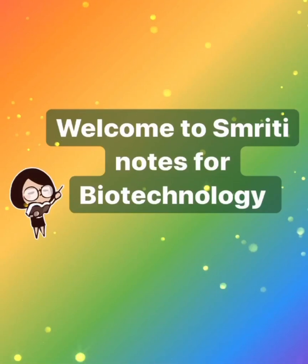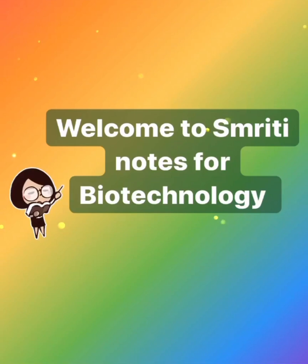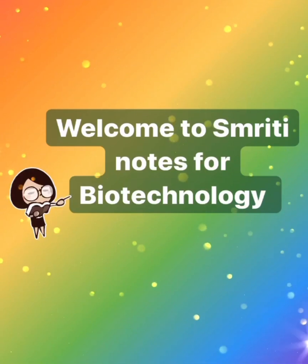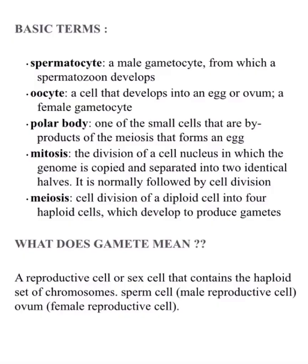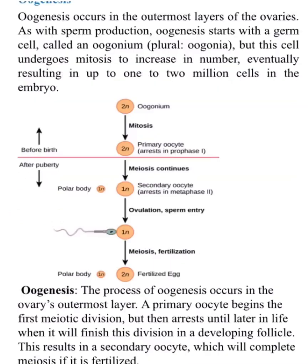Hello friends, welcome back to Smithi Notes for Biotechnology. In today's lecture we will study about gametogenesis. Before starting, let's look at some basic terms. Gametogenesis is basically the production of sperms and eggs, and it has two types: spermatogenesis and oogenesis.